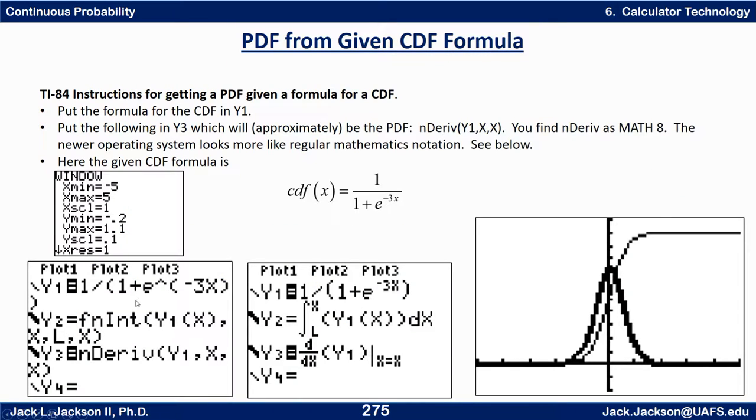So the way you do this is you put your formula in Y1. Here's an example, here's the CDF. This is the CDF formula that's in Y1. And what you put in Y3 is the derivative of Y1. You don't have to worry about what that all means except that Y3 will be the PDF if Y1 is the CDF. And you also need to know where to get that. It's math 8.